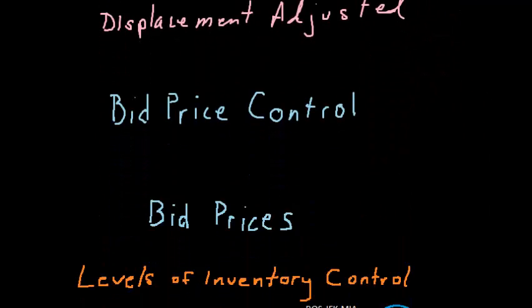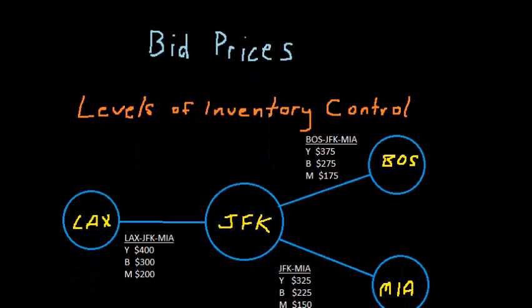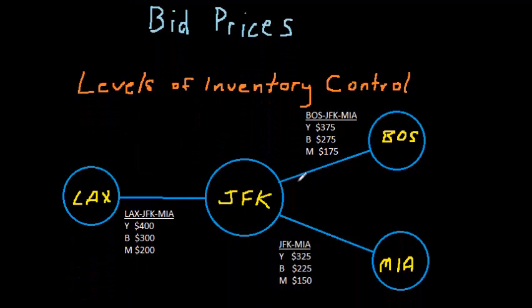Let's take a look at this sample network and look at the JFK to Miami leg and see how these different types of controls would work.